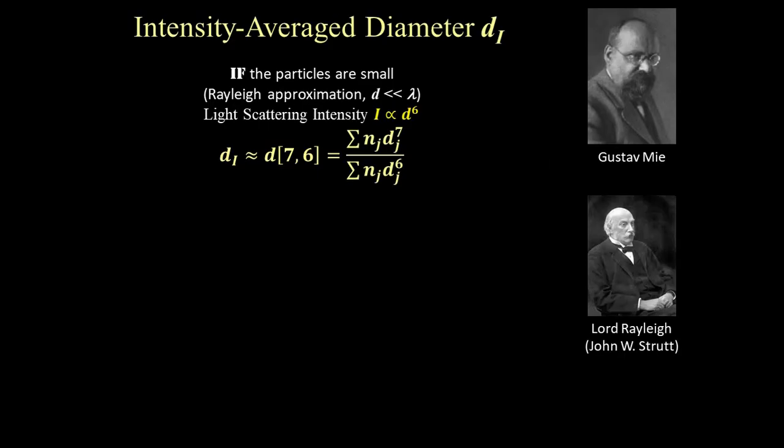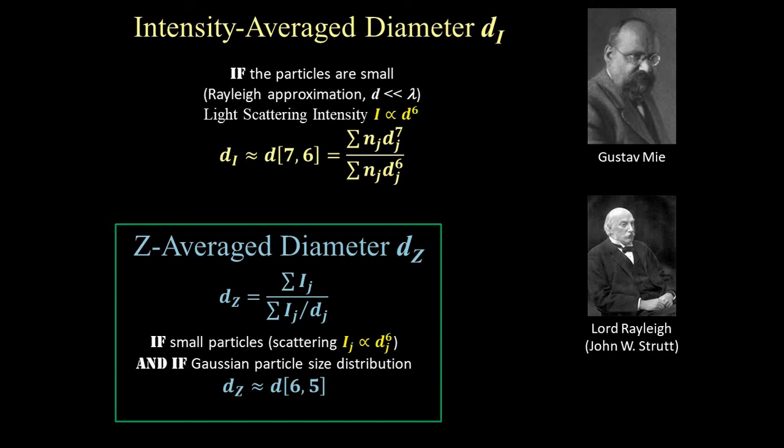This finally brings us to dZ, which is the intensity weighted harmonic average, or z average diameter for short. The weighting factor in this case is not straightforward, and the reason for this formulation goes back to how DLS calculates diameter from the Stokes-Einstein equation. For the case of small particles and the Gaussian distribution particle sizes, dZ simplifies to an average diameter weighted by a factor of d to the fifth power. So its absolute value often falls between dV and dI.